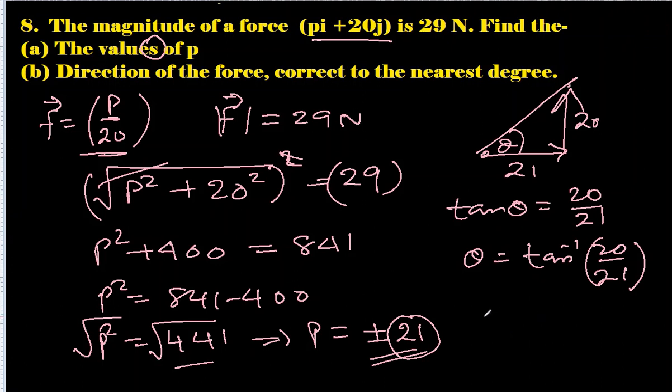And this will be the direction of the first force, which will be tan θ = 20 over 21, opposite over adjacent. θ = tan⁻¹(20/21).